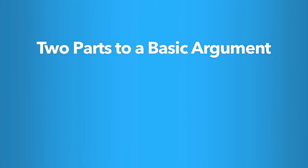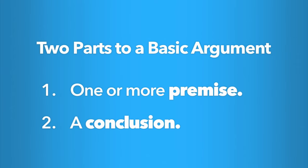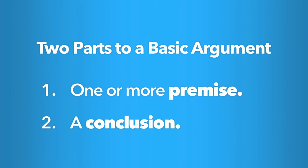At its most basic, an argument consists of two parts: one, one or more premises, and two, a conclusion. These two parts must work together in order to offer a particular stance or position on an issue or problem and form an argument. In an argument, the premises supposedly provide the reasons the person has for thinking the conclusion is true.